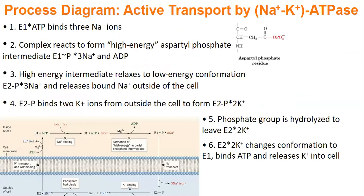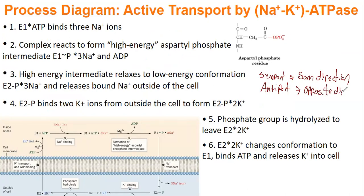Happy Friday the 13th! Now we're getting into active transporters. There are different types: a simport transports things in the same direction, and an antiport transports things in opposite directions. A simport would bring two things in the same direction, while an antiport would bring one outside and one inside.